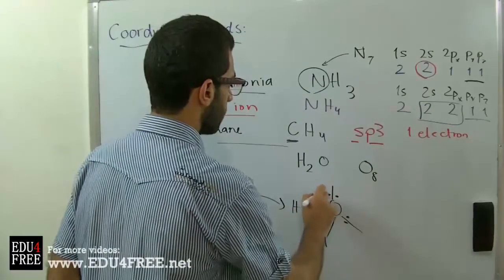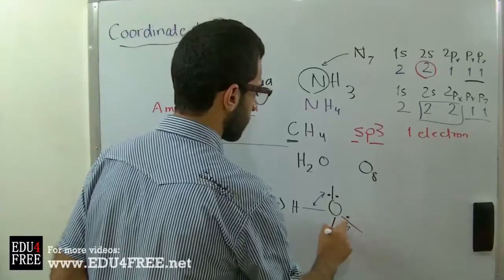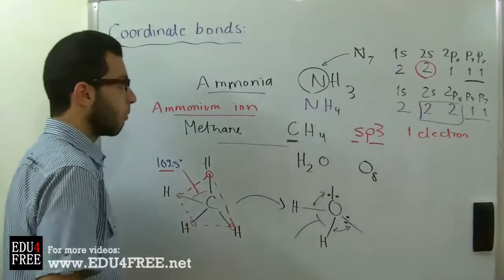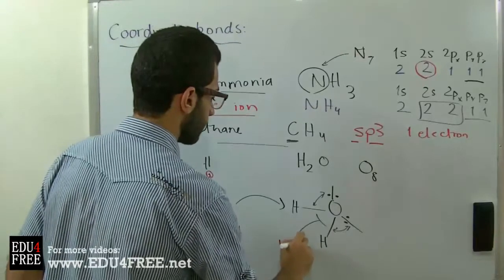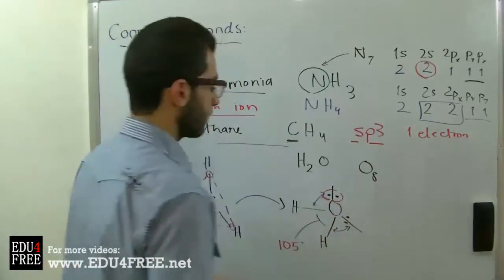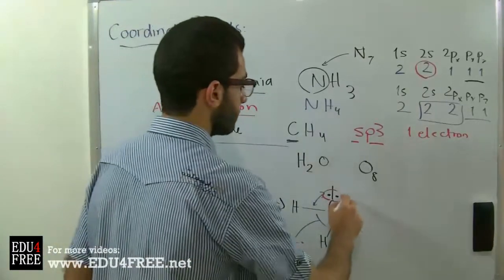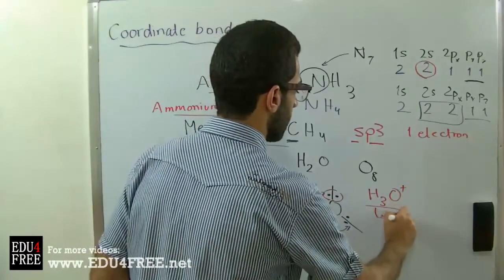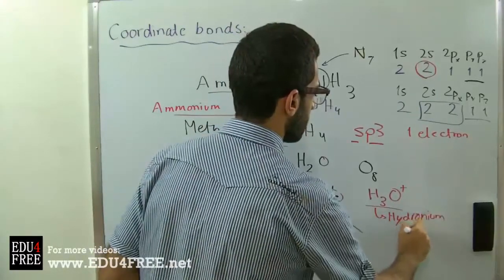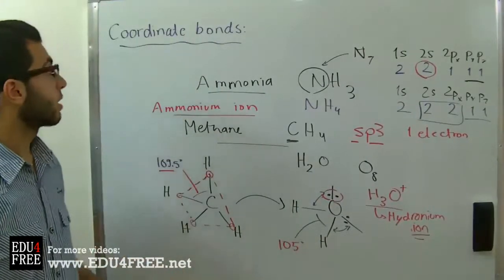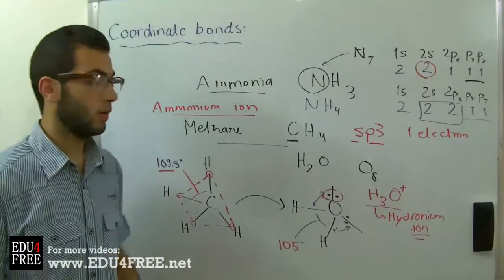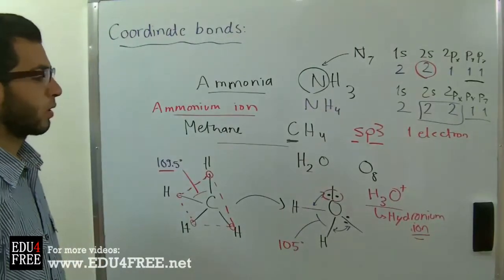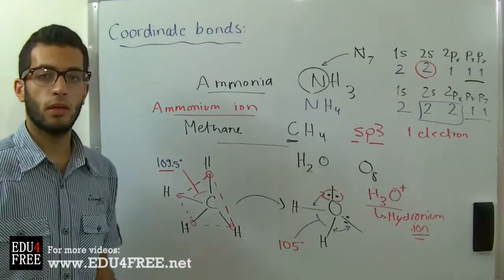So here the lone pairs of electrons are more repulsive because they are two instead of one. So this angle decreases more than ammonia, so it becomes 105 degrees. And one of these two lone pairs of electrons can combine with hydrogen, forming an H3O+. This is called the hydronium ion. So that's all about coordinate bonding. Next time we will talk about hydrogen bonding, which also takes place between water molecules and other molecules. And we all know the properties of the hydrogen bonds. So until then, I thank you for watching and see you.